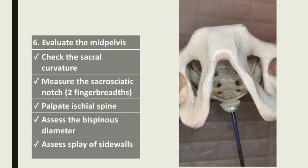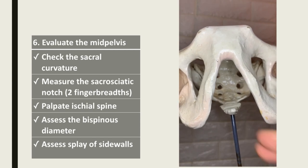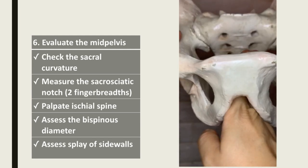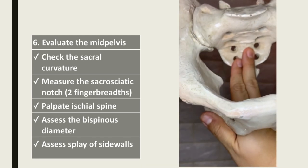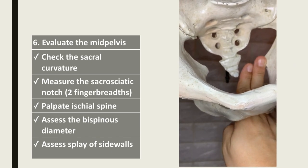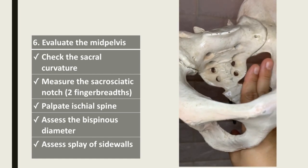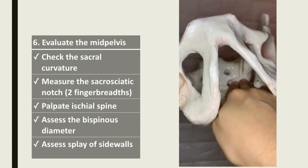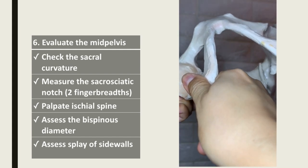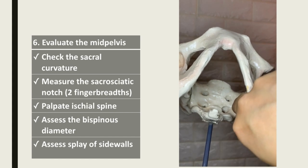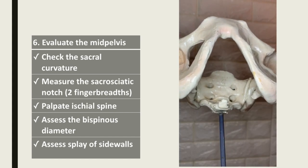Next, we evaluate the adequacy of the mid-pelvis or mid-plane. We check the sacral curvature — whether it is curved or straight. We palpate the ischial spines and note their prominence, measure the bi-spinous diameter, and measure the sacro-sciatic notch, which normally accommodates two finger-breadths. We also assess the splay of the side walls: if the ischial tuberosity is lateral to the ischial spine, that is a divergent side wall; if medial, that is a convergent side wall.